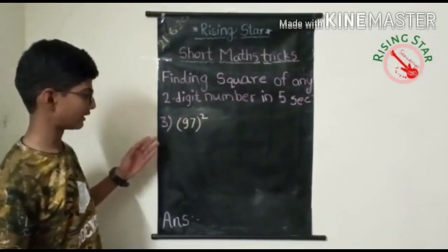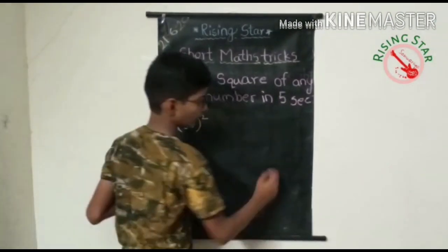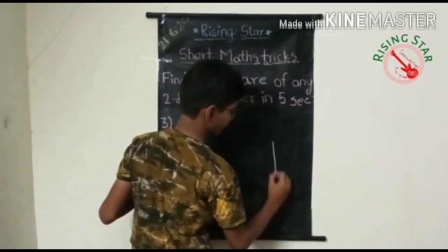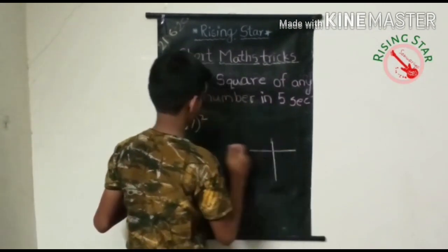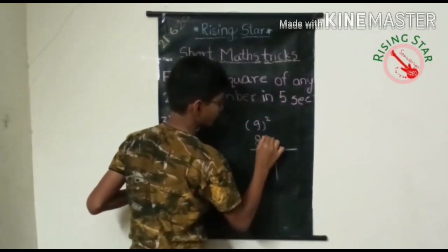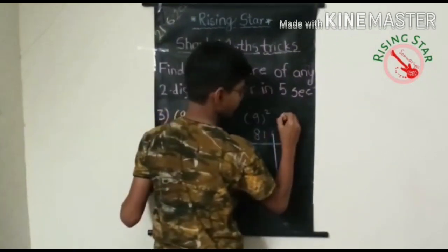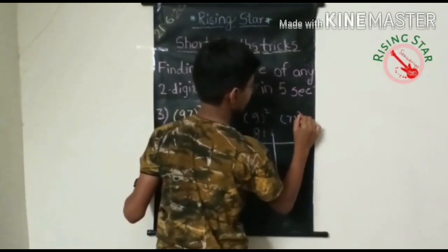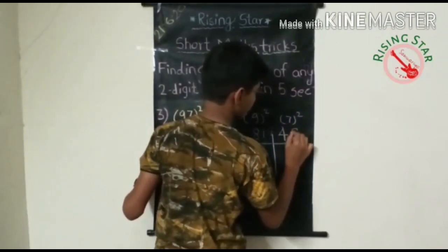Now let's take the third example. Let's begin with the third example. We will take ninety-seven. First of all, draw two lines, and now write nine square, that is eighty-one, and now write seven square, which is forty-nine.